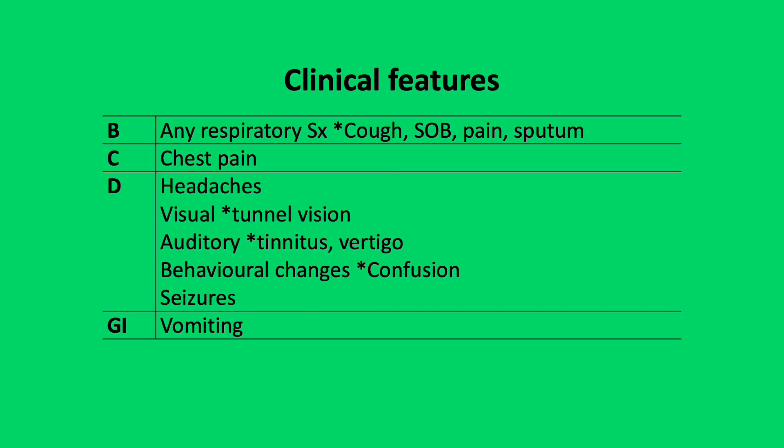The symptomatology for patients presenting with hyperoxemia largely affects the lungs, manifesting as any respiratory symptom, and the CNS, involving headaches, visual, auditory and behavioural changes, in addition to seizures.